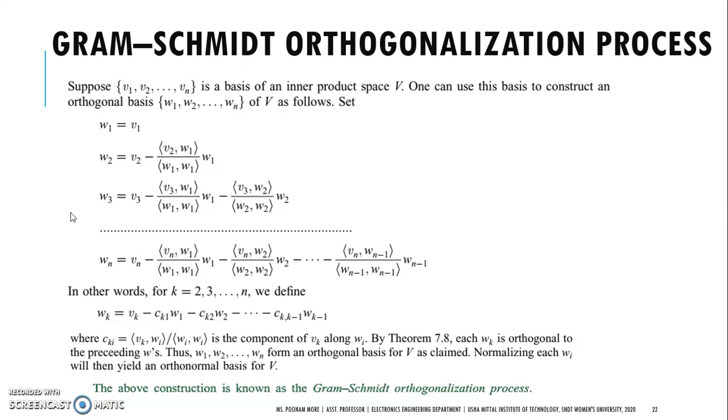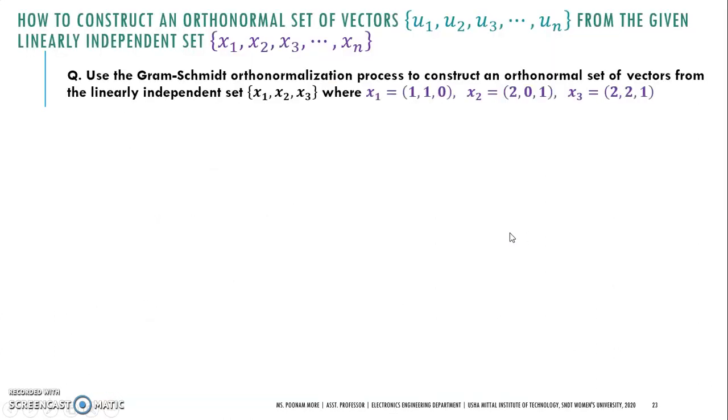So let's proceed towards the problem. Here we will see how to construct the orthonormal set of vectors U₁, U₂ up to Uₙ from the given linearly independent set X₁, X₂, up to Xₙ.